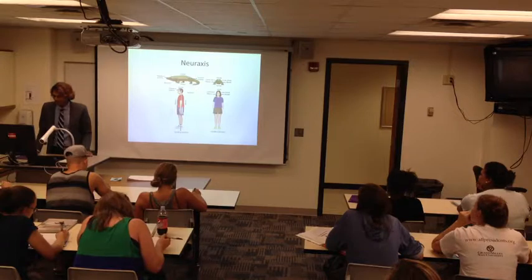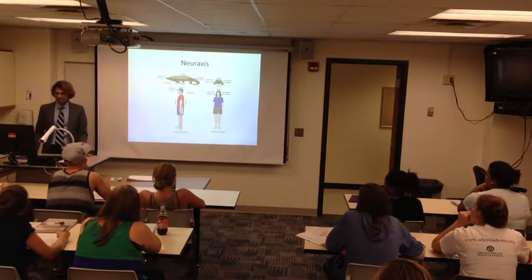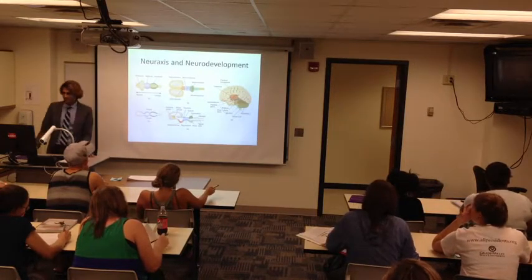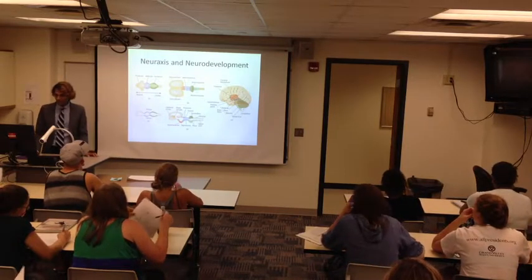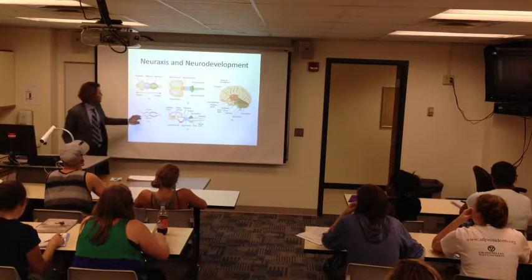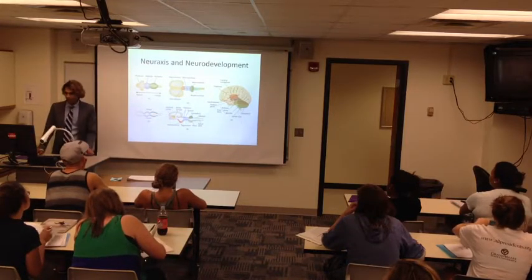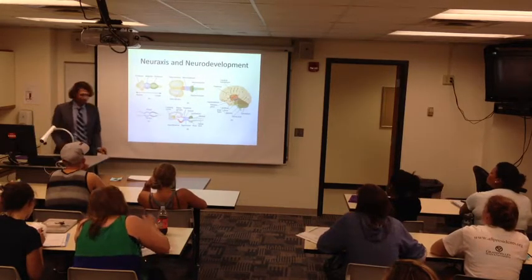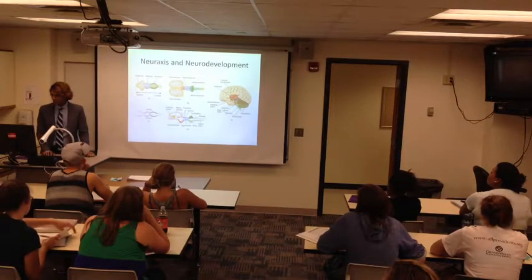In neurodevelopment, you'll hear that development is cephalocaudal — meaning it occurs from head to tail. Here's a view of the neuraxis in development: the brain develops over time from the initial neural tube into a more complex structure. As the tube develops in two and three dimensions, different structures emerge — the forebrain as well as more primitive structures — ultimately taking the familiar brain shape.